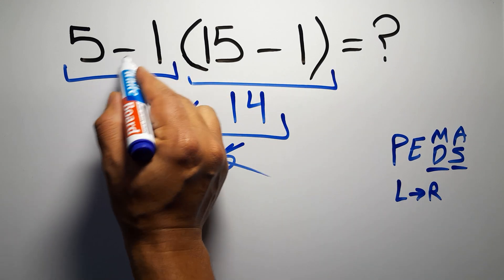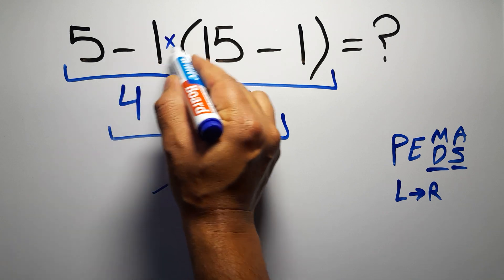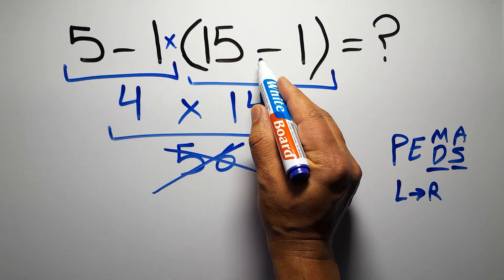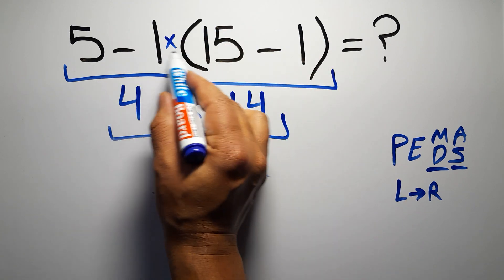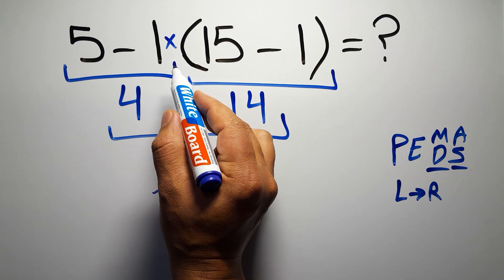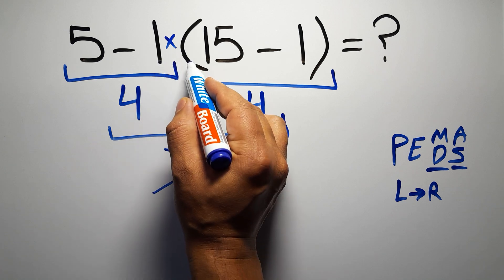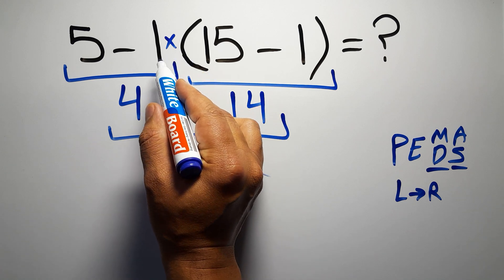In this expression we have one subtraction, one multiplication, and one parentheses. Inside this parentheses we have one subtraction. Here we have a multiplication because in mathematics, when a number is placed next to parentheses, it means multiplication.